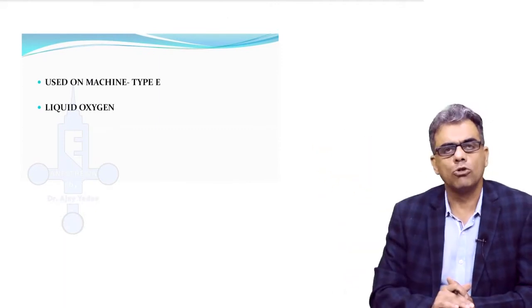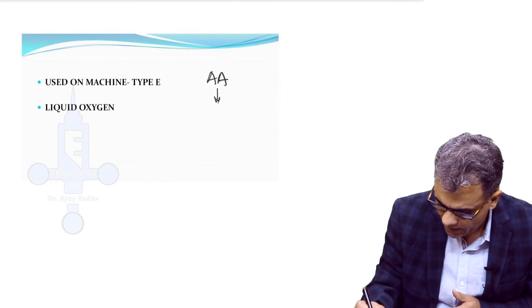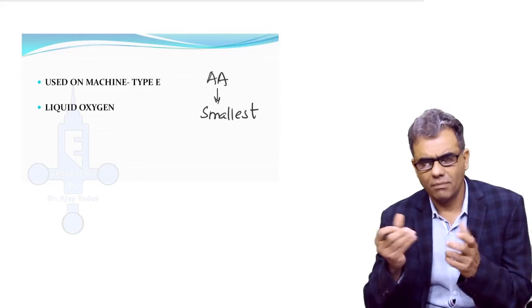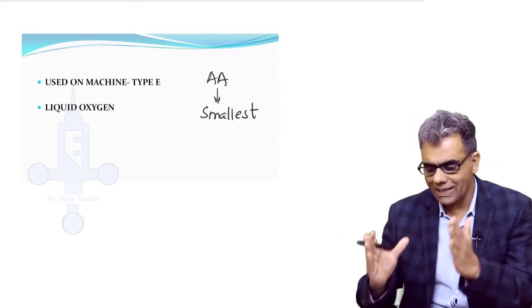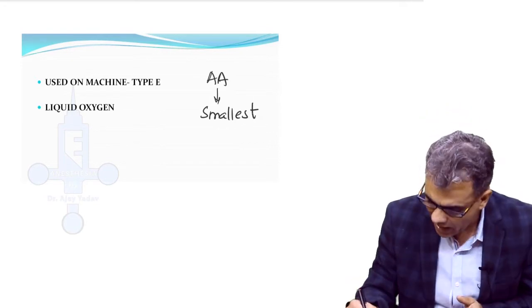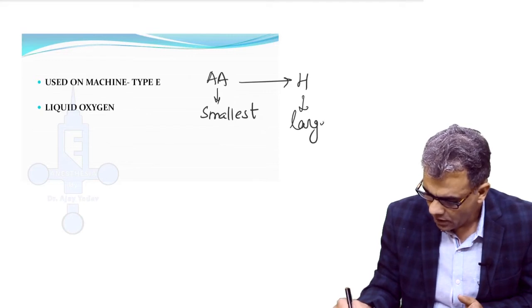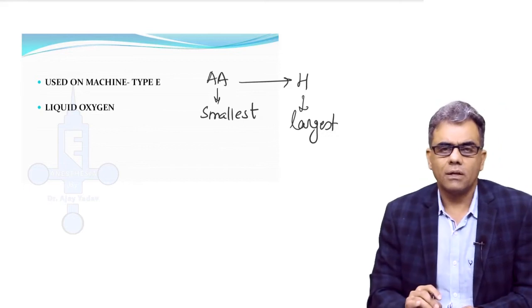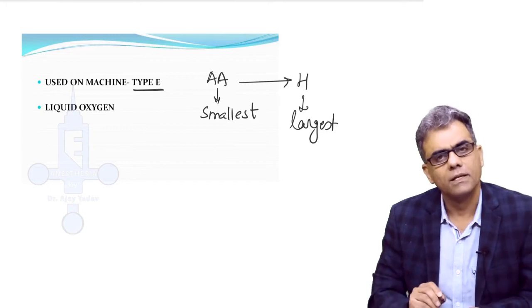Now regarding cylinders, you will see different sizes also. The smallest is double A—that is the smallest—and this is part of a resuscitation bag. Many of you would have seen in a bag such a small size cylinder. The largest one is H, which is very big, very large, almost of the human size. The common cylinder that you will see being attached to anesthesia machine is type E.